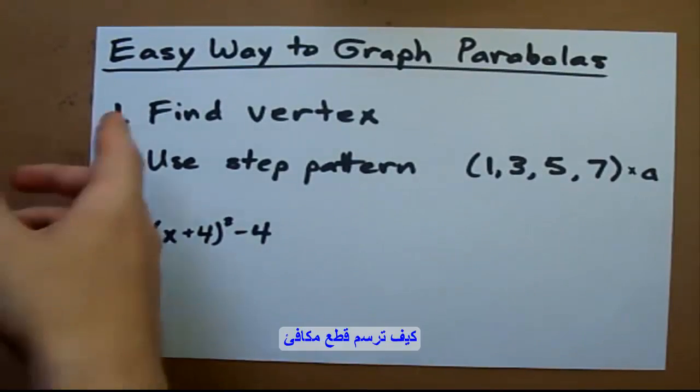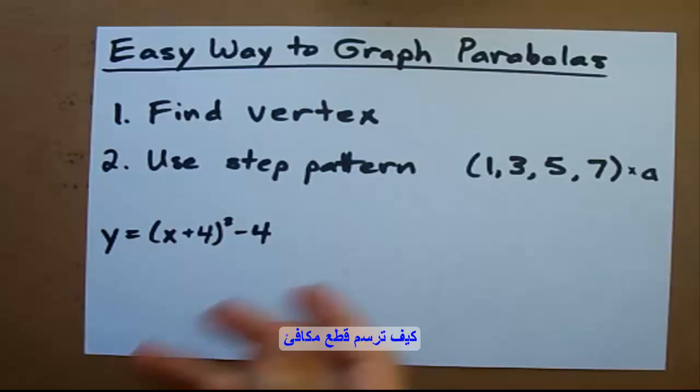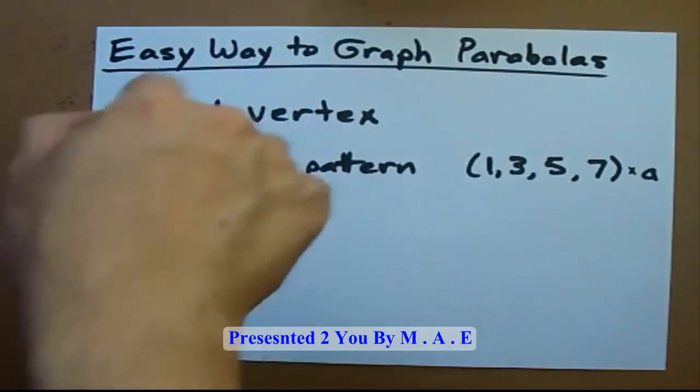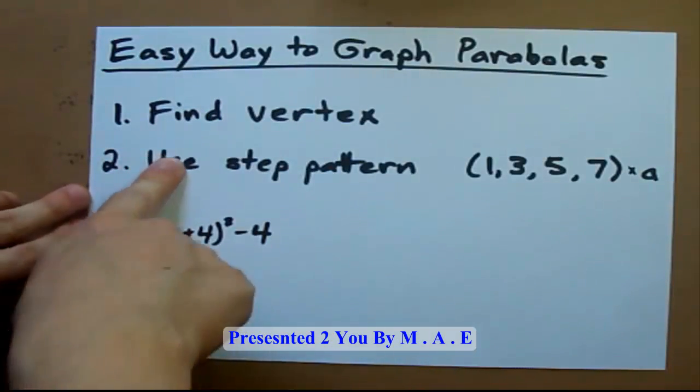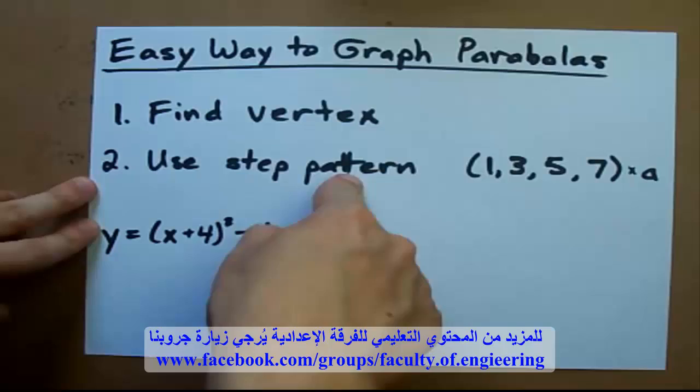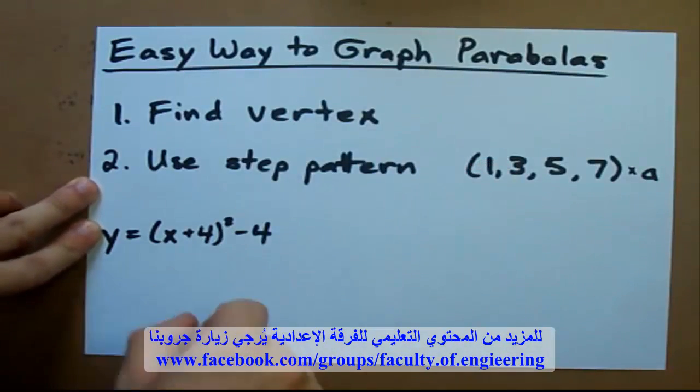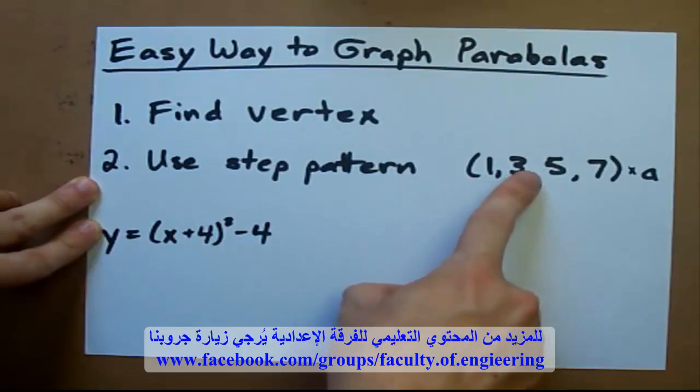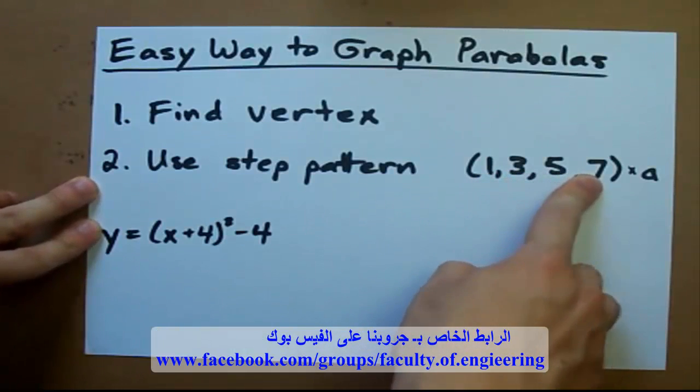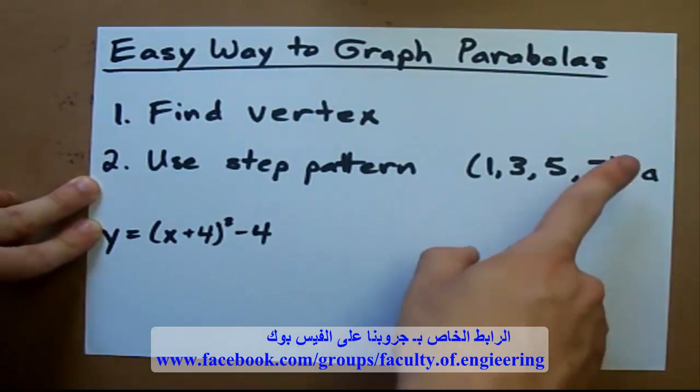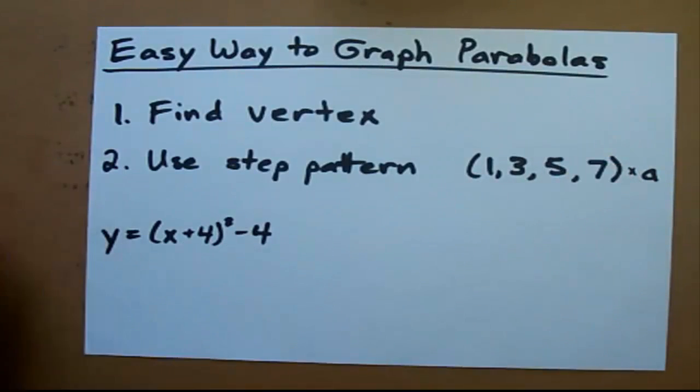Here for you is the easiest way that I've ever found to graph parabolas. It's a two-step process where all you have to do is find the vertex of the parabola and then use a step pattern to generate more points. The step pattern you're going to memorize for parabolas is 1, 3, 5, 7, and you're going to have to multiply it by any number that's in front of your x squared.